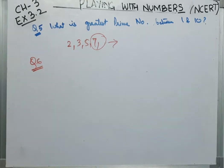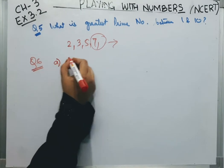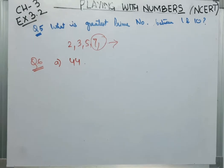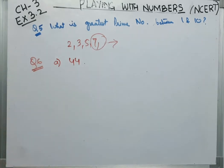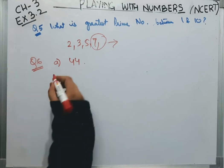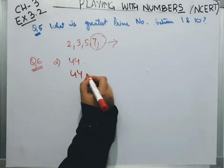Express the following as a sum of 2 odd prime numbers. Hame in ko, in numbers ko, aise likhna hai, as a pair of sum of 2 odd prime numbers. 2 odd prime numbers ki tada, is ko hume likhna hai. Hame 44 ko kaise likh sakte hai?